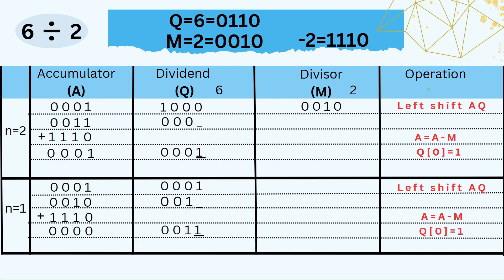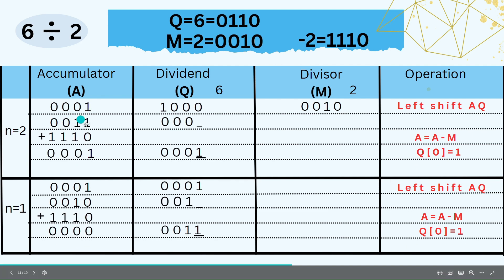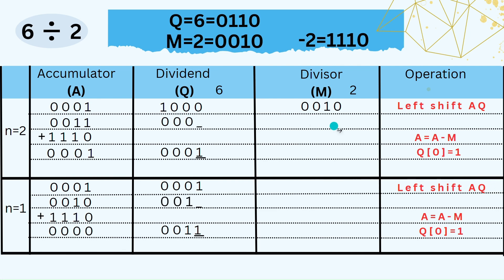For N = 2, we have A = 00001 and Q = 1000. Performing left shift AQ gives A = 0011 and Q = 00 with an empty bit. We perform A = A − M by adding 2's complement of M (−2), giving A = 0001. Since the MSB of A is 0, the step is successful. We set Q0 = 1 and do not need to restore A. At the end of N = 2, we have A = 0001 and Q = 0001.